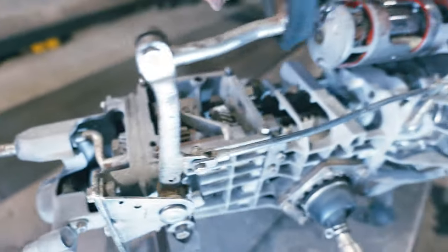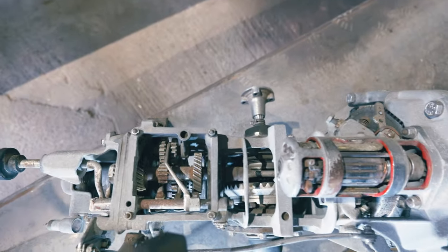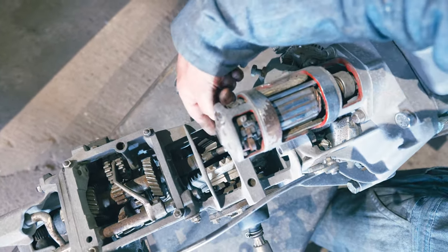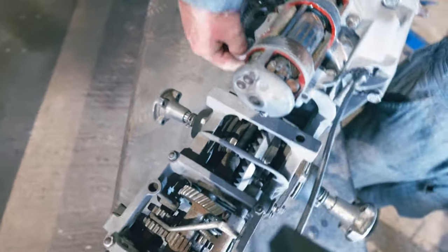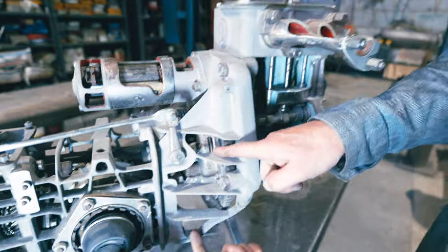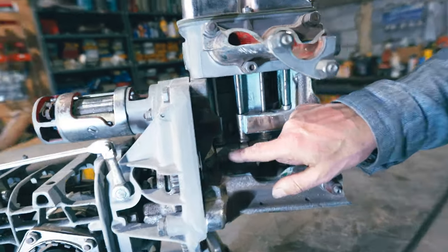There's the input shaft, and it goes across over the top of the diff and then out the front of the gearbox into the bell housing. Again, all the bell housing is pierced out so you can see the clutch, and then we come into here and into our engine.